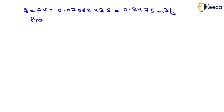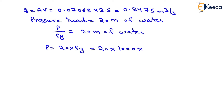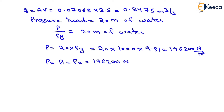The pressure head is given as 20 meters of water, so p/(ρg) = 20 m. Solving for p: p = 20 × ρ × g = 20 × 1000 × 9.81 = 196,200 N/m². Since the pipe has constant diameter, pressure intensity p = p1 = p2 = 196,200 N/m².